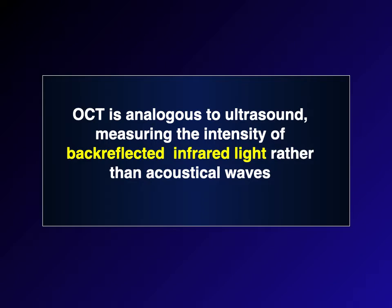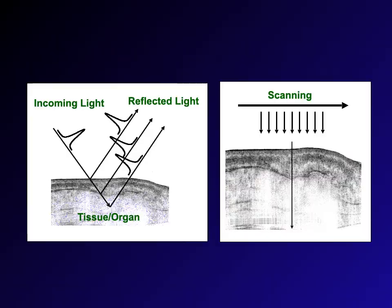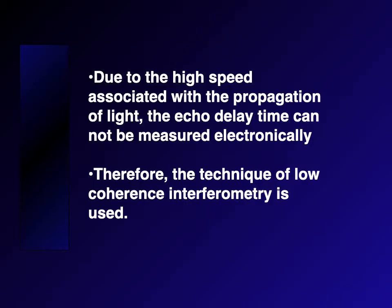The next slides are ones we used in the 1990s because we don't do many of these basic talks anymore. OCT is analogous to ultrasound, measuring the intensity of back-reflected infrared light rather than acoustical waves. Low-coherent infrared light pulses are generated at the sample. The time for light to be reflected back gives you distances, and the intensity of back-reflection is plotted as a function of depth, analogous to ultrasound. It's called LCI in one dimension, and in two dimensions it developed the name optical coherence tomography.